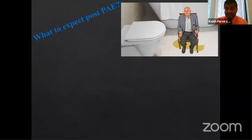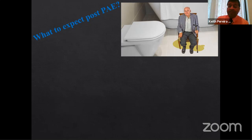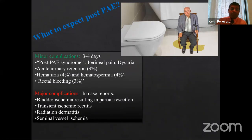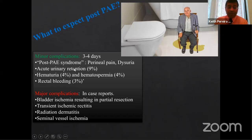Tell the patient he'll be in the restroom for the next five days — frequency, dysuria, and urgency are expected. I give patients a urinal to keep by their bedside. Post-PAE syndrome includes perineal pain, dysuria, acute urinary retention (can occur), hematuria, hematospermia, and small amounts of rectal bleeding. These are the minor complications. Major complications include bowel ischemia, transient ischemic rectitis, and radiation dermatitis.